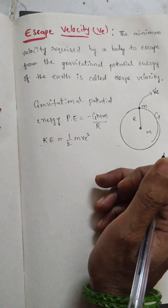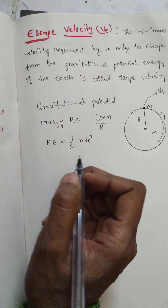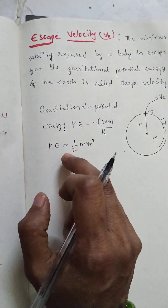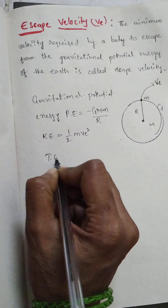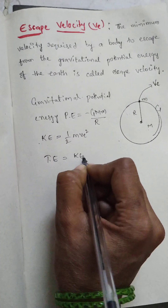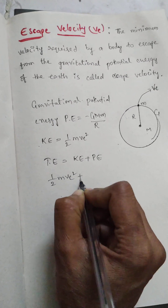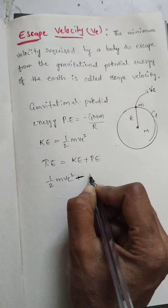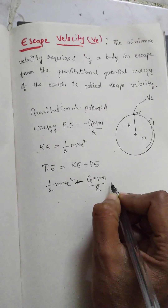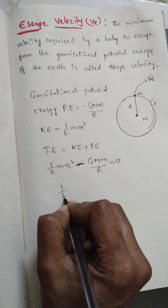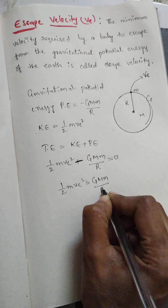According to the law of conservation of energy, if the body is escaping from the Earth's gravitational field, the total energy should be equal to zero. That is, potential energy plus kinetic energy equals zero: ½mv² − GMm/R = 0.